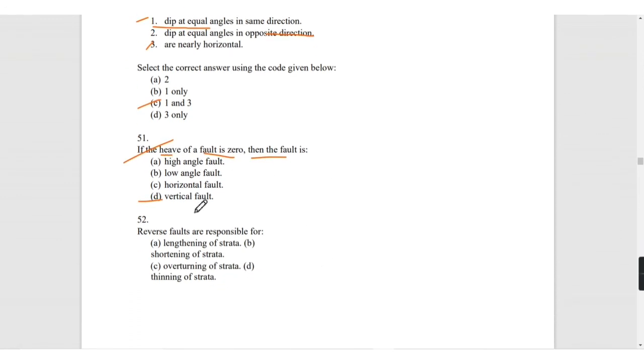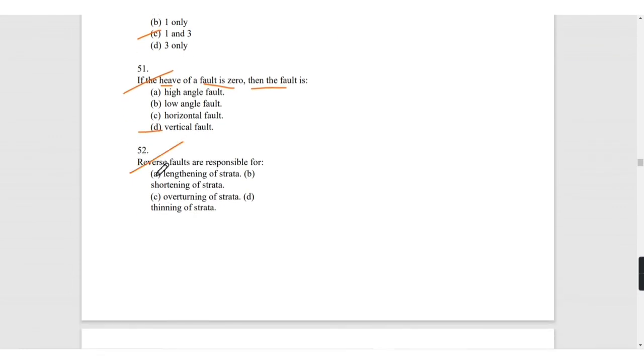Reverse faults are responsible for the shortening of strata due to compression. In the case of extension, we get normal fault.